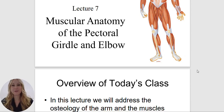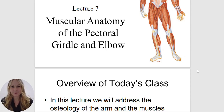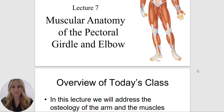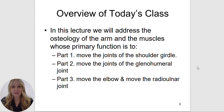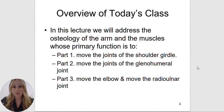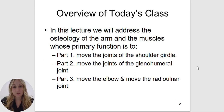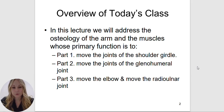In today's lecture, we are going to go over the muscular anatomy of the pectoral girdle and the elbow. We are going to go over the osteology of the arm, which means we are going to review the bones that make up the arm and the shoulder girdle, as well as the muscles which move the shoulder girdle, move the glenohumeral joint, move the elbow, and move the radial ulnar joint.